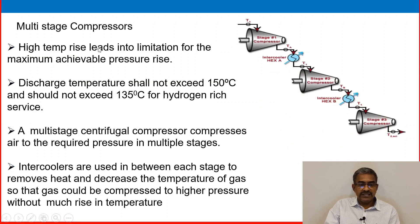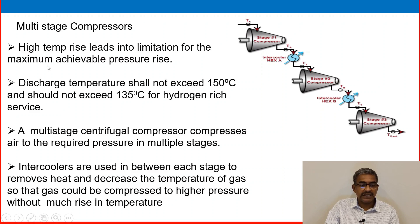Axial compressors have the benefit of high efficiency and large mass flow rate, but require several rows of airfoils to achieve large pressure ratios, making them complex and expensive. Another topic is the multi-stage compressor. In centrifugal compressors with stage 1, stage 2, and so on, there is one important point: high temperature rise leads to a limitation of the maximum achievable pressure rise.